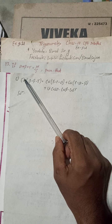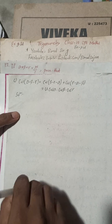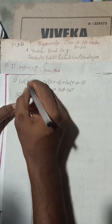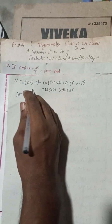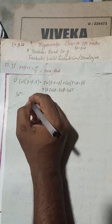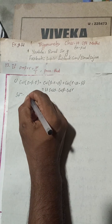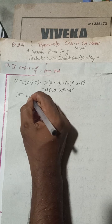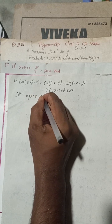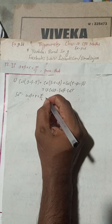So let's begin the solution. Given: alpha plus beta plus gamma is equal to pi radian by 2.